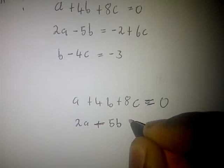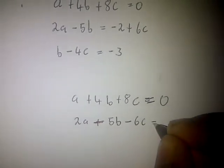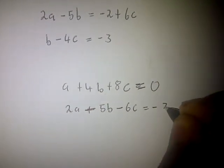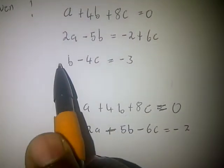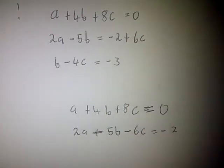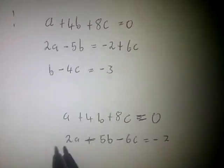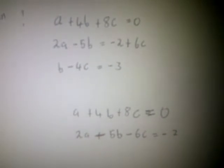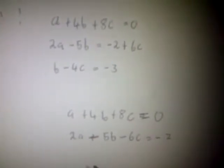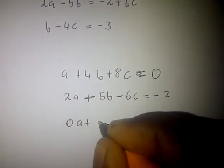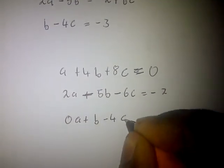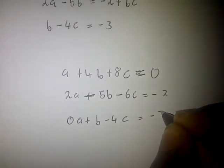The second equation is: 2a minus 5b minus 6c equals negative two. Then the last equation — we don't have the value of a in this equation, so what we have to do is add a zero coefficient for a: 0a plus b minus 4c equals negative three.